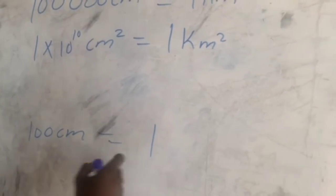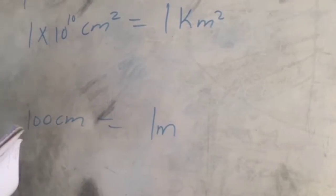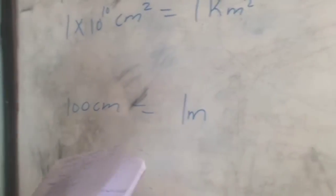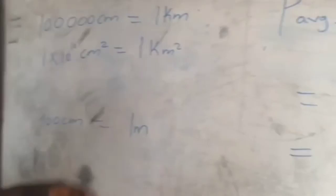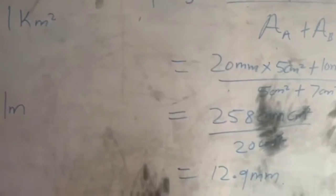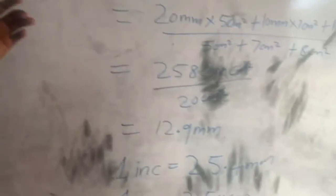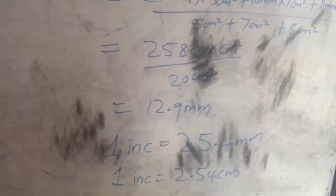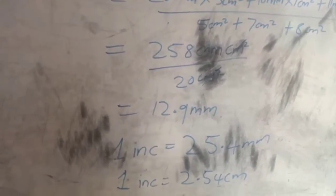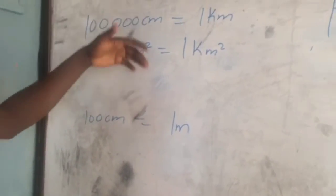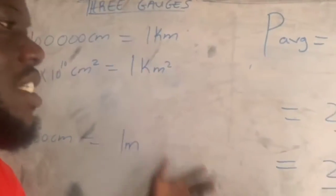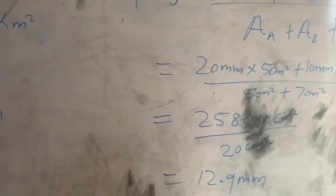For centimeters to meters: 100 centimeters equals 1 meter. These are the conversions you need. When told to work in centimeters with millimeters, or millimeters squared with inches, you now know how to go about it.